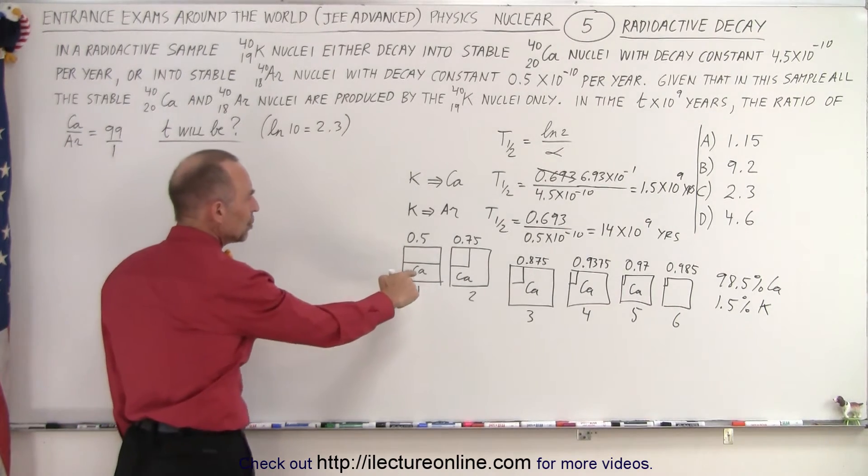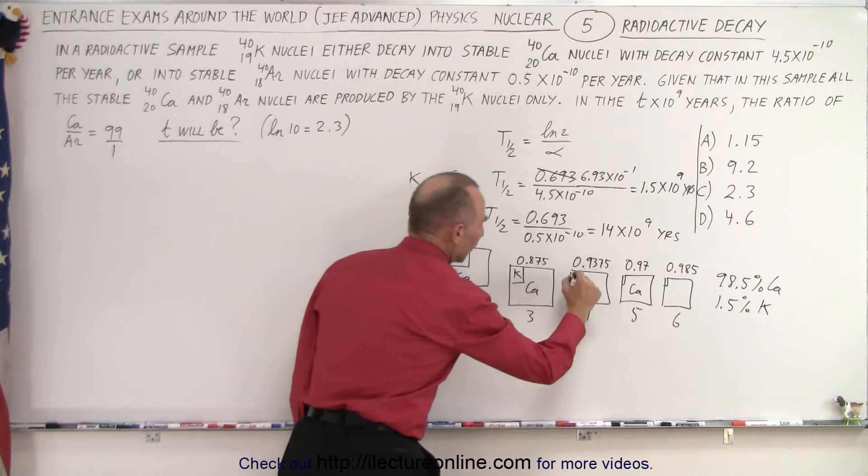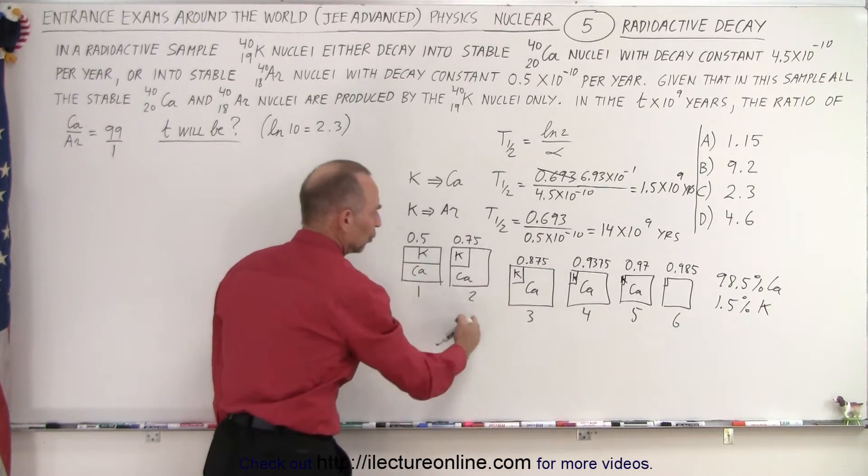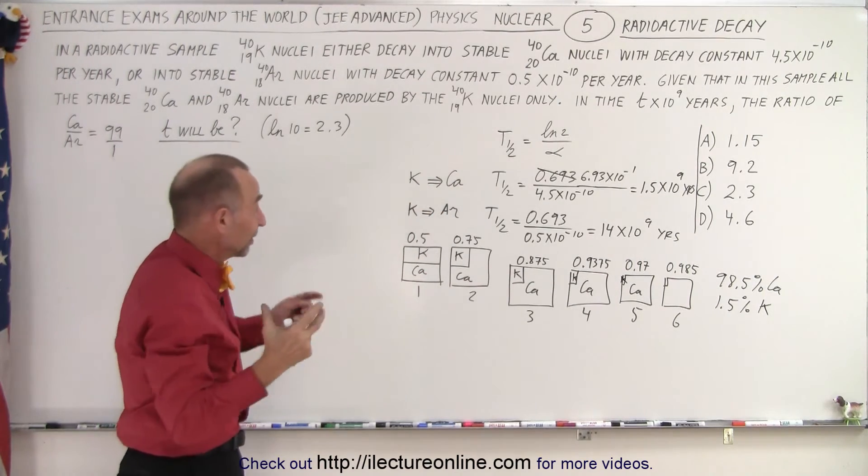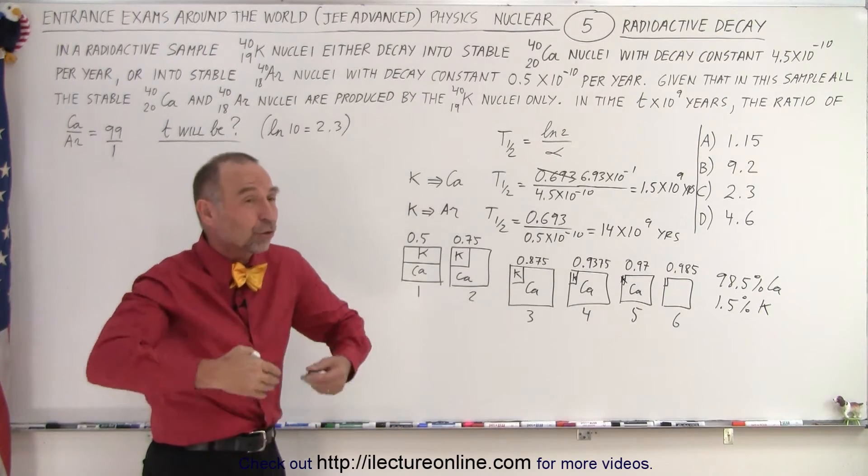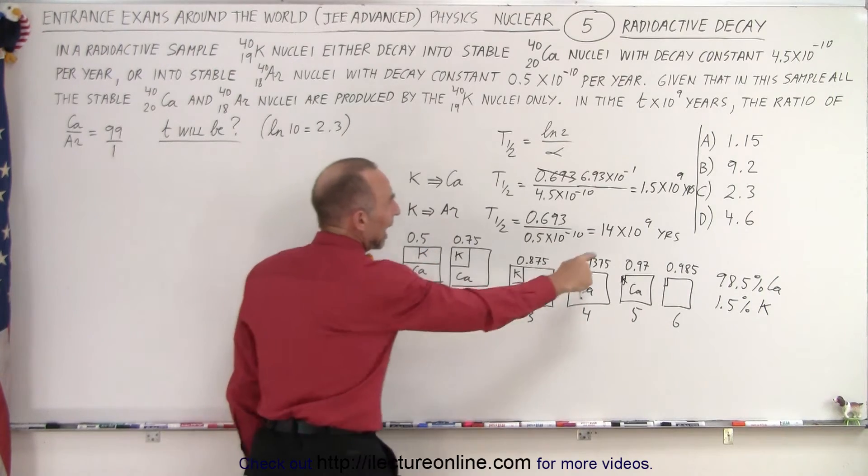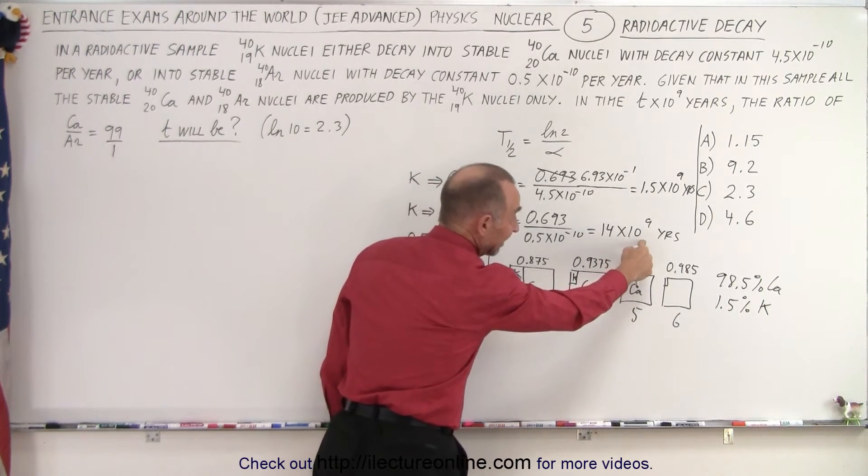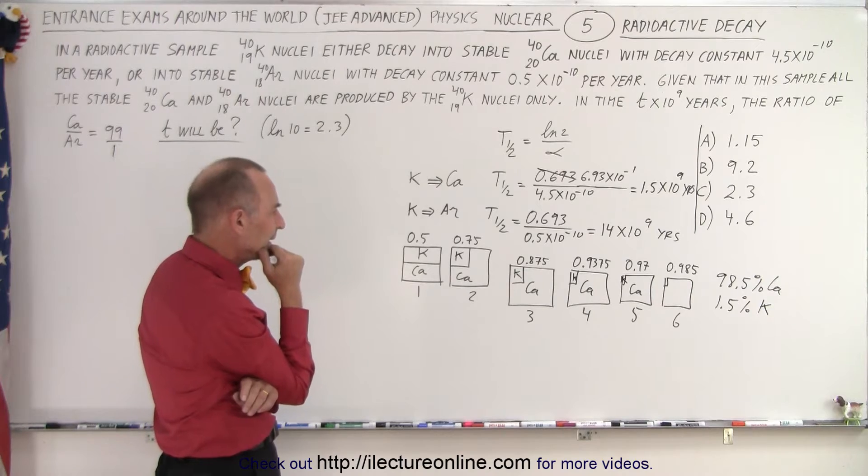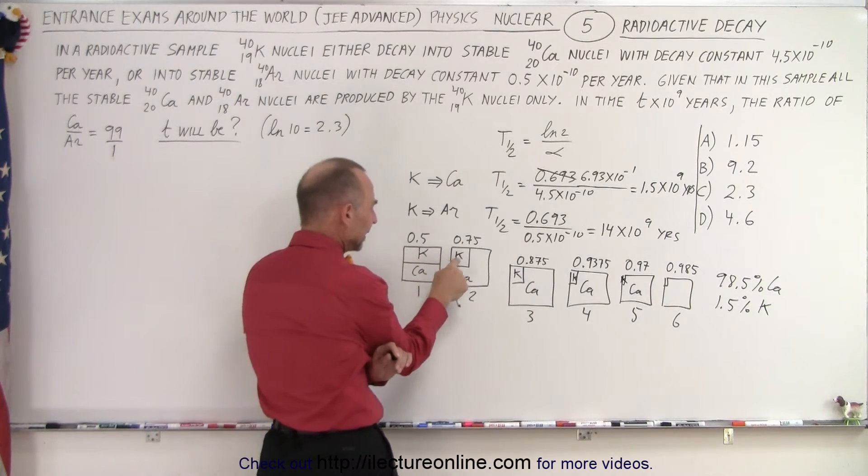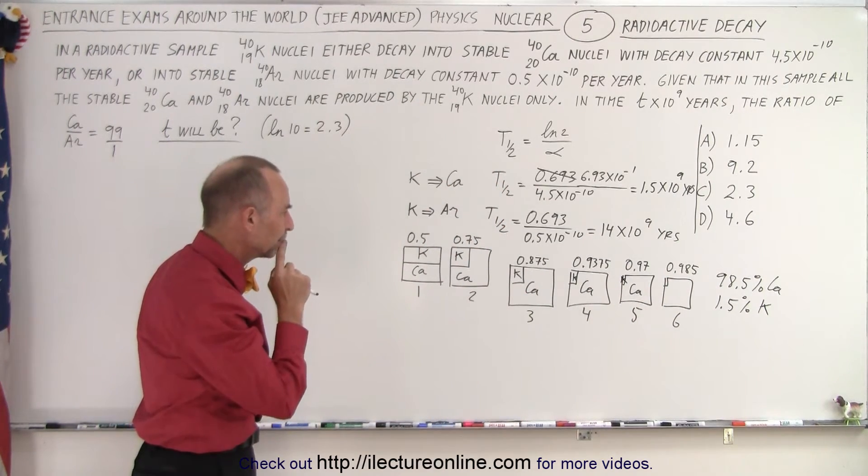Well, notice that in the beginning you have a lot of potassium left. Of course, the amount of potassium left diminishes very quickly. So after two, three, four half-lives of the potassium to calcium decay, there's not a lot of potassium left to decay into argon because it's decaying much more slowly. So most of the decay from potassium to argon happens in the very beginning. But with a half-life of 14 billion years, you can see that most of the decay would happen in the beginning and at the very end, almost none of it would decay into argon.